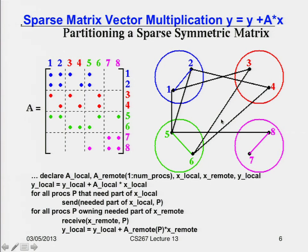All the entries outside the diagonal blocks represent communication — those two dots correspond to those two edges. The code says: if you own a value of x that somebody else needs, you have to send it to them; then you wait to receive the entries of x you need, and then you can continue. Ideally, I want to do this partitioning to minimize the number of edges, because those represent the number of entries of x sent from one processor to another.